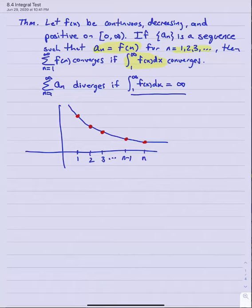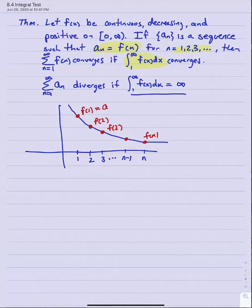What I have here in the picture is a generic picture of a decreasing function in blue, which is continuous and positive. It matches up at the integer values, so the red points you see would be f of 1, f of 2, f of 3, and so on — f of n — and those coincide with the values of our sequence. So f of 1 is a1, f of 2 is a2, f of 3 is a3, and in general f of n is a sub n. We're replacing a sequence by a real-valued continuous function that happens to match at the integer values.